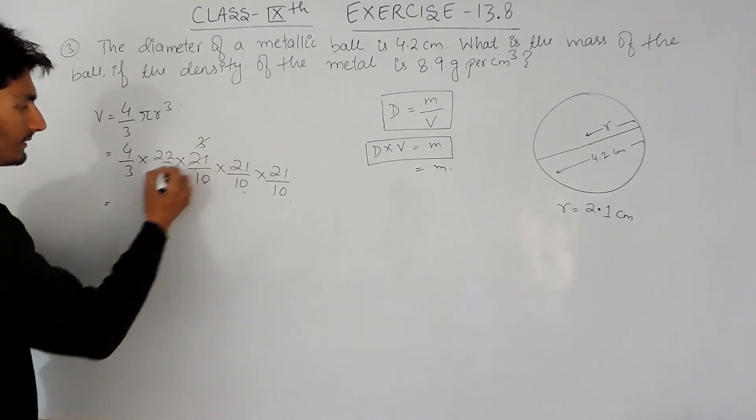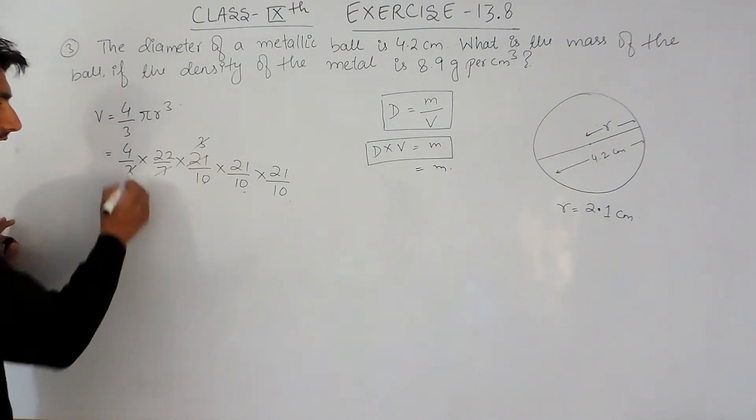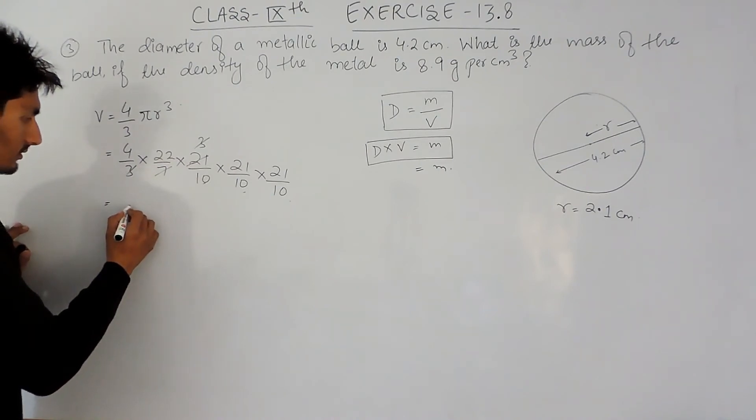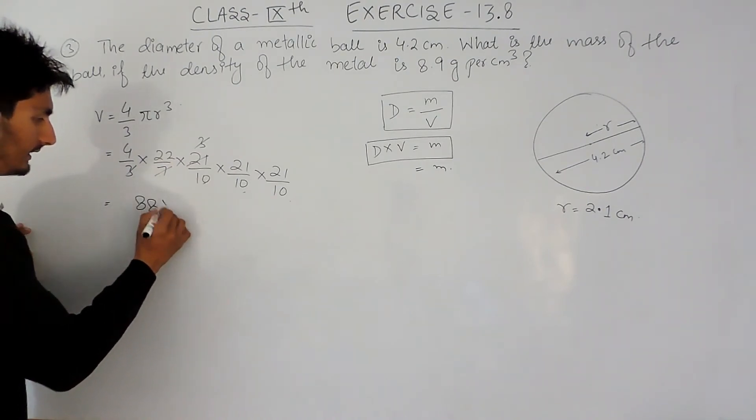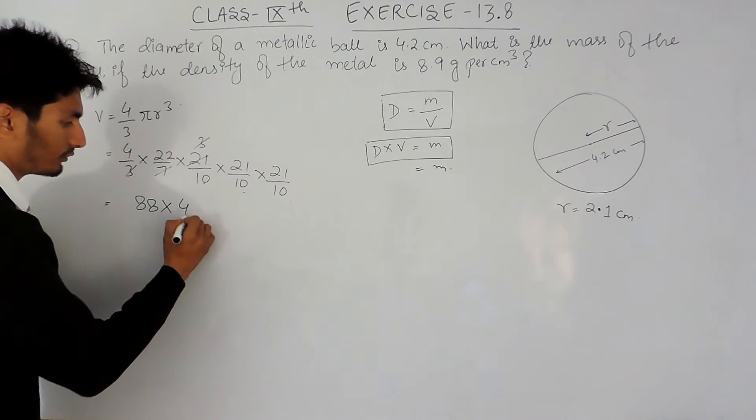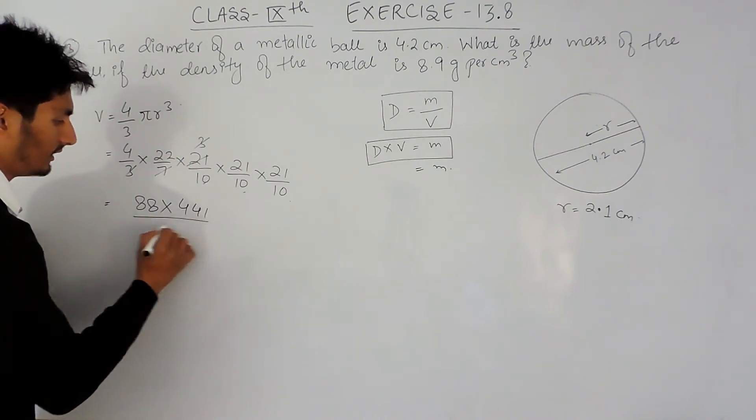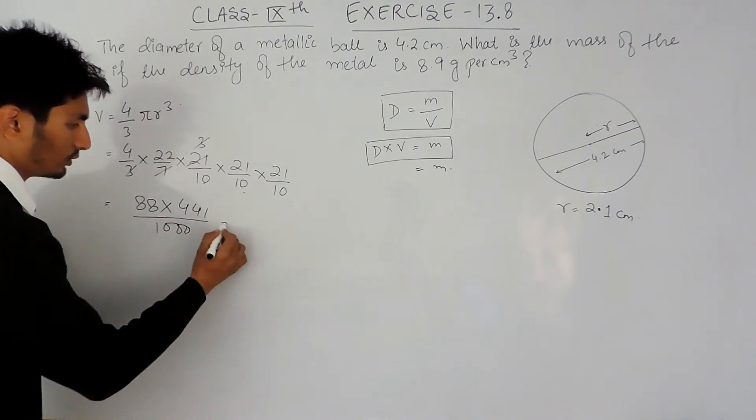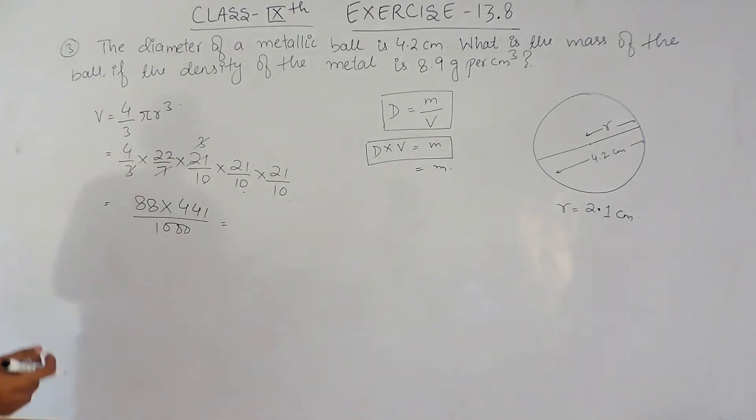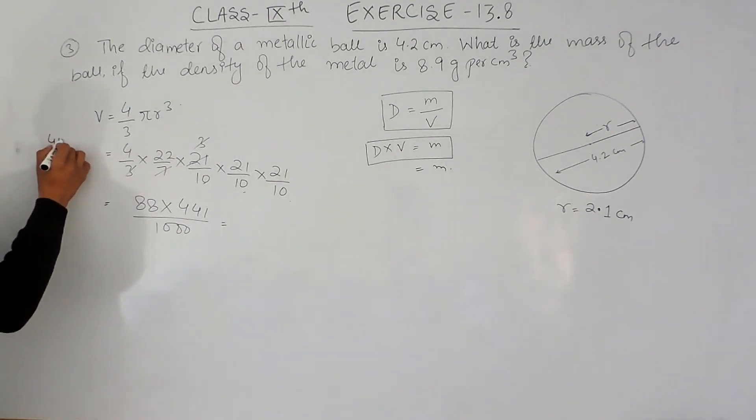And 3 can be cancelled with this 3, and it will be 88, and the square of 21 is 441 upon 3 zeros. Now I have to multiply these two numbers, so 441 multiplied by 88 will be...